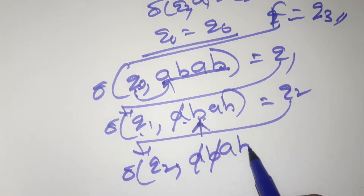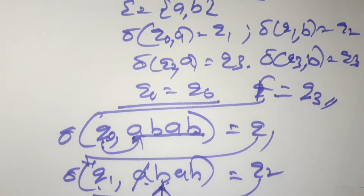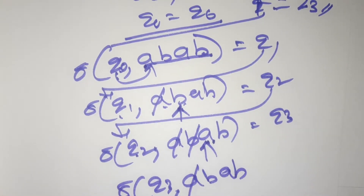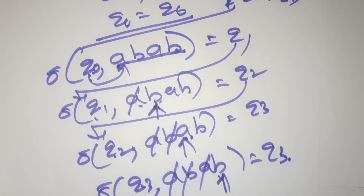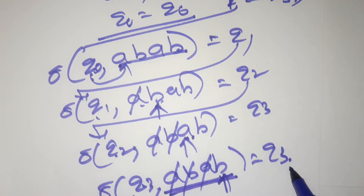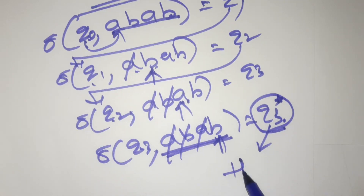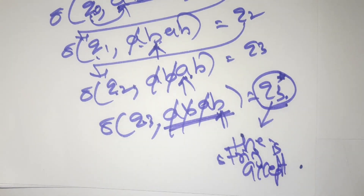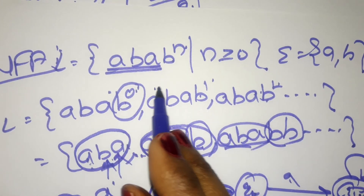Now present state is q2; the next input symbol is 'a', so delta(q2, a) = q3. Then delta(q3, b) = q3. After reading the entire input string 'abab', we reach the final state q3. Since q3 is the final state, the string is accepted. This is a simple example of designing an NFA for the language ab(ab)^n.